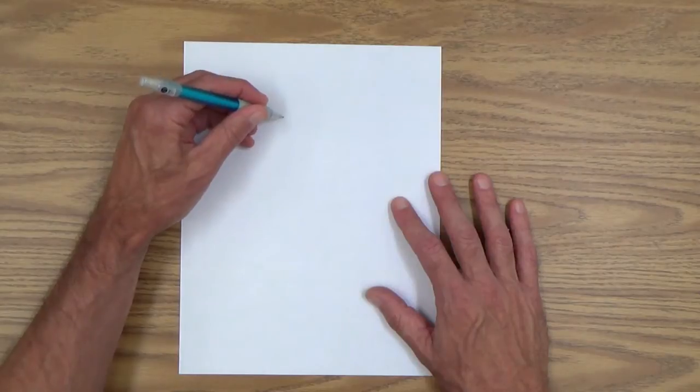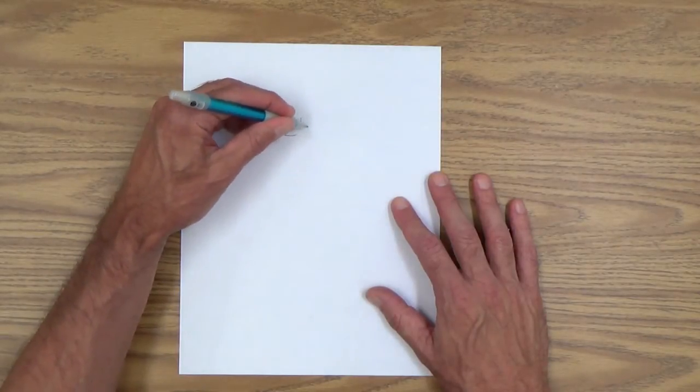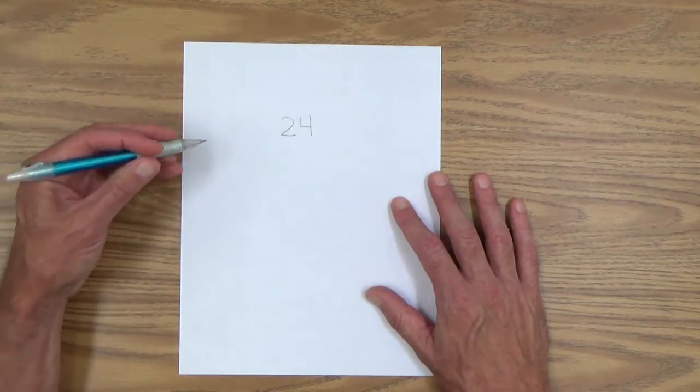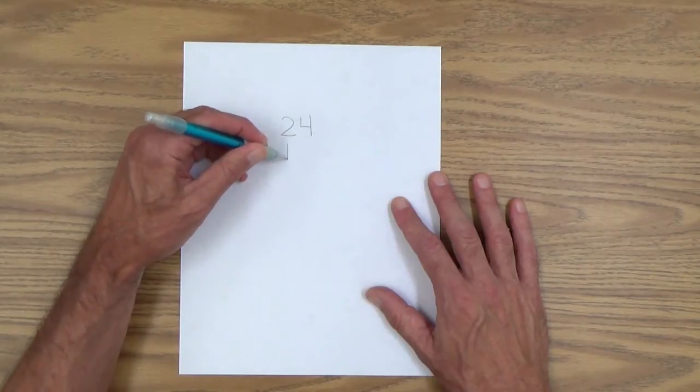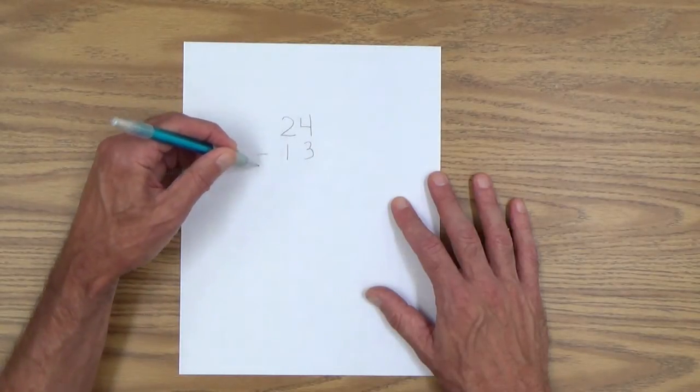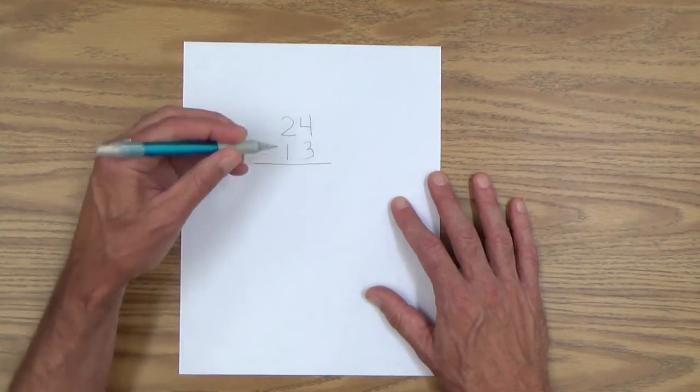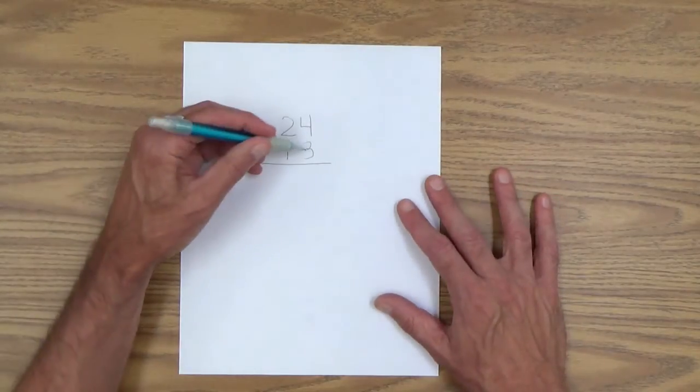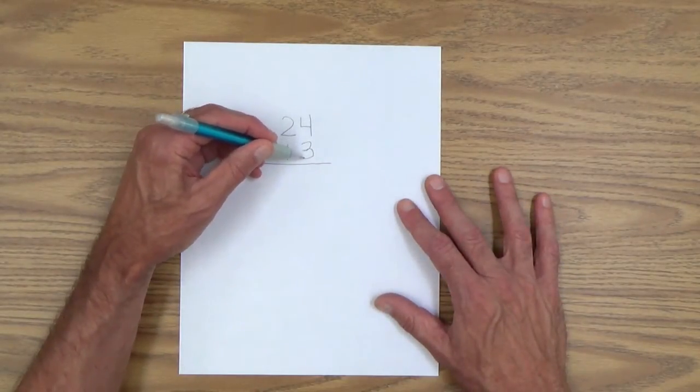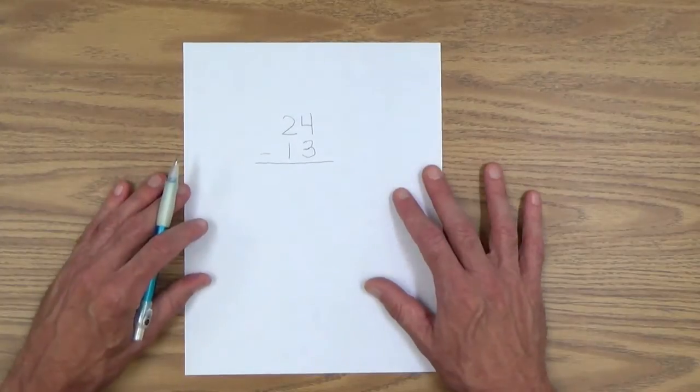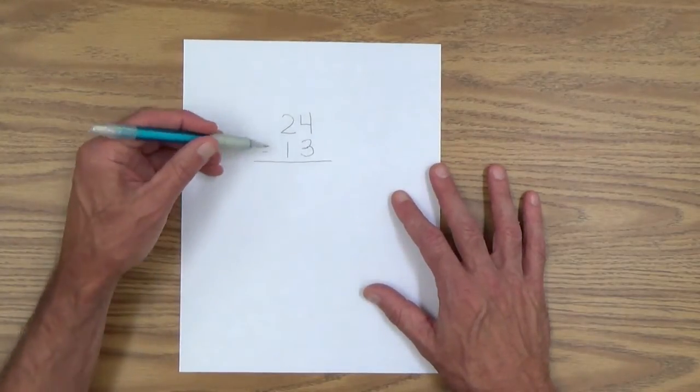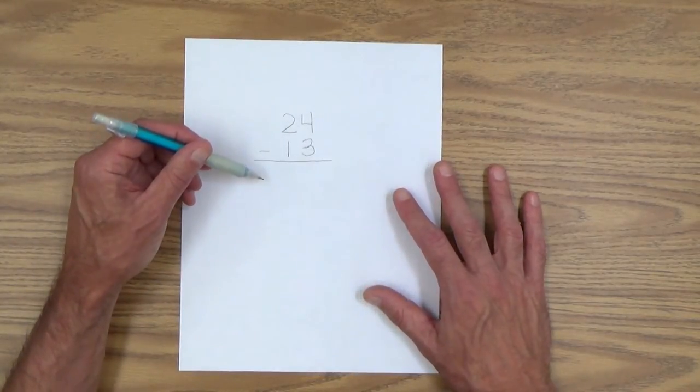Let's start out with a problem. 24 minus 13 equals how many? And I should have gotten these numbers a little closer together here. There we go.